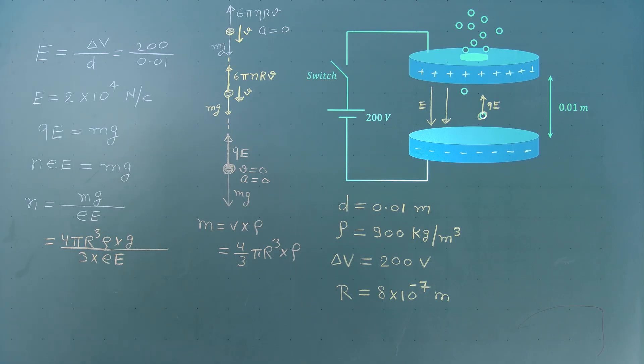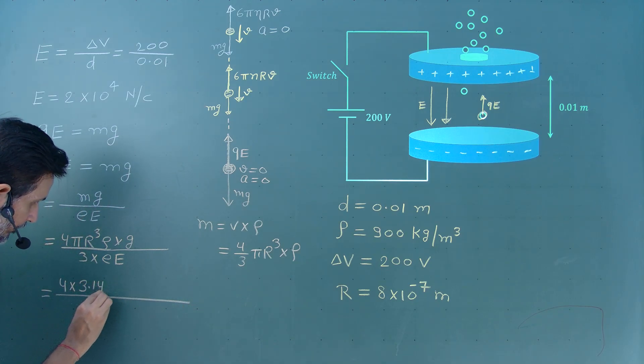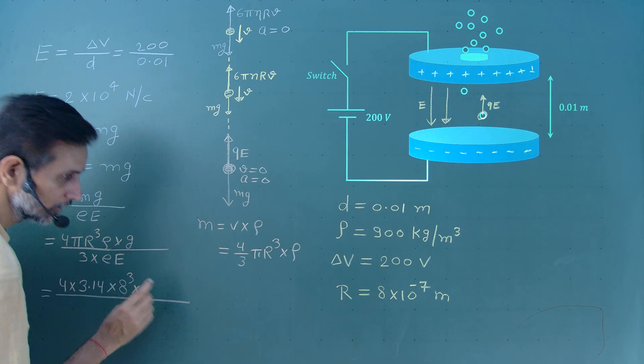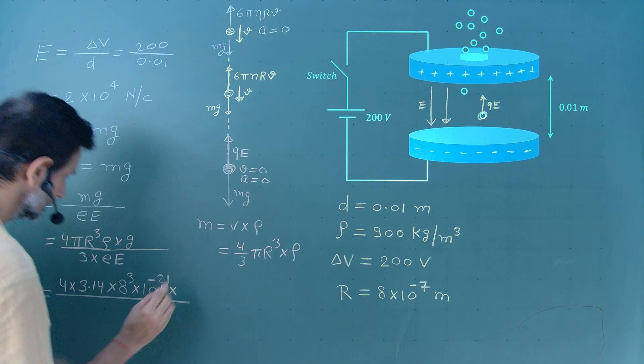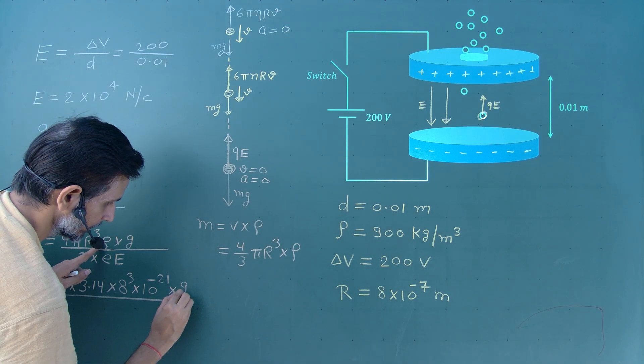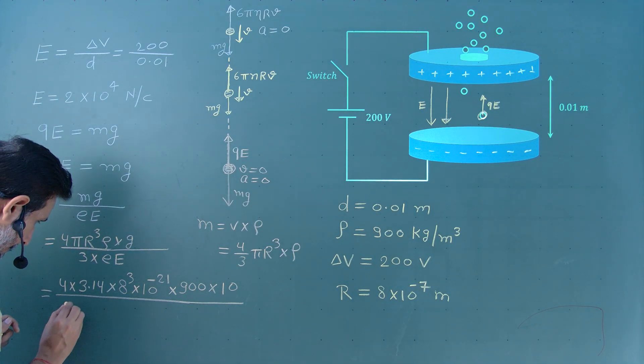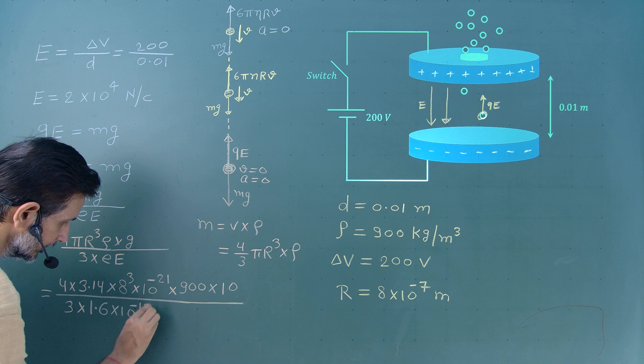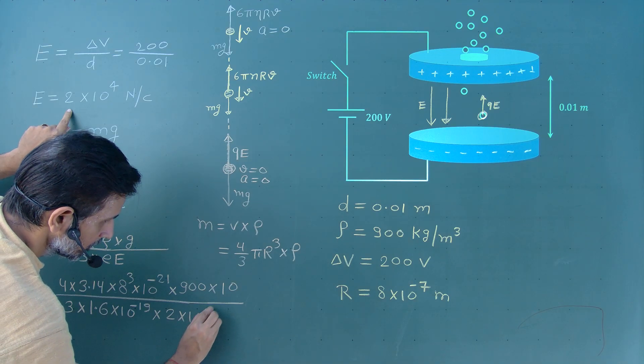So, mass equal to 4 pi R cubed rho divided by 3 into G. Mg, so 4 pi R cubed rho G divided by 3 into e into E. Let us put all the numbers and check what is the value of N. So, numbers will be like this: 4 value of pi 3.14, R to the power 3, 8 to the power 3 into 10 to the power minus 3 cubed, 10 to the power minus 21, density 900, into G 10, divided by 3 into e 1.6 into 10 to the power minus 19, value of electric field 2 into 10 to the power 4.